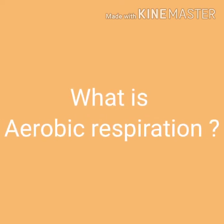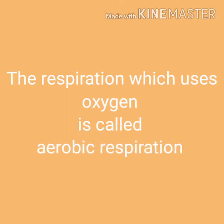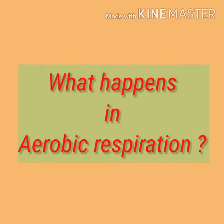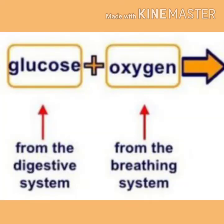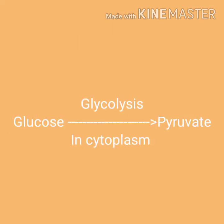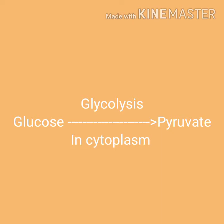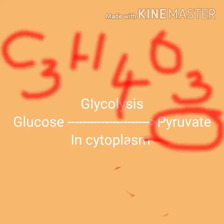What is aerobic respiration? The respiration which uses oxygen is called aerobic respiration. In aerobic respiration, the glucose in the food is completely broken down into carbon dioxide and water by oxidation. The first step is the breakdown of glucose, a 6-carbon molecule, into a 3-carbon molecule called pyruvate.